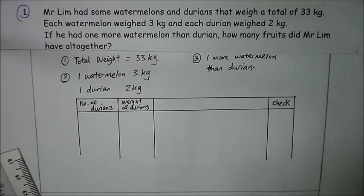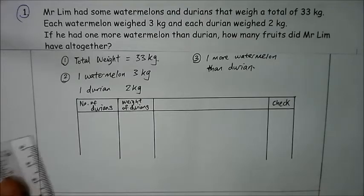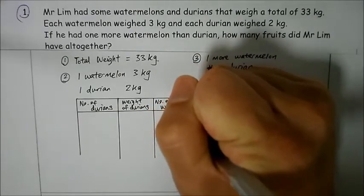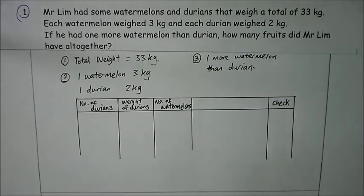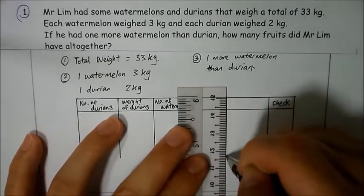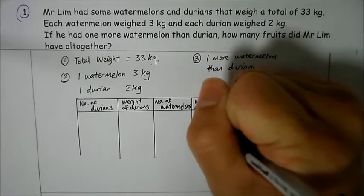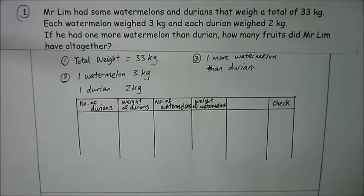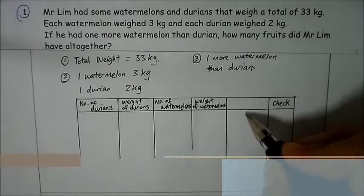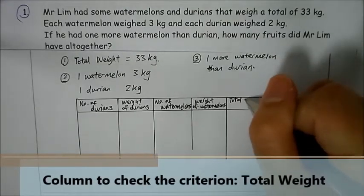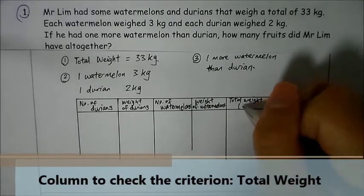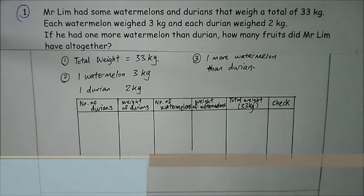The second criterion says there will be one more watermelon than durian, so the next column is the number of watermelons. We also need to find the total weight of the watermelons guessed, so the following column is the weight of watermelons. Finally, we include a column for the total weight of durians and watermelons combined, which must equal 33 kg — written as a reminder to fulfill this criterion.